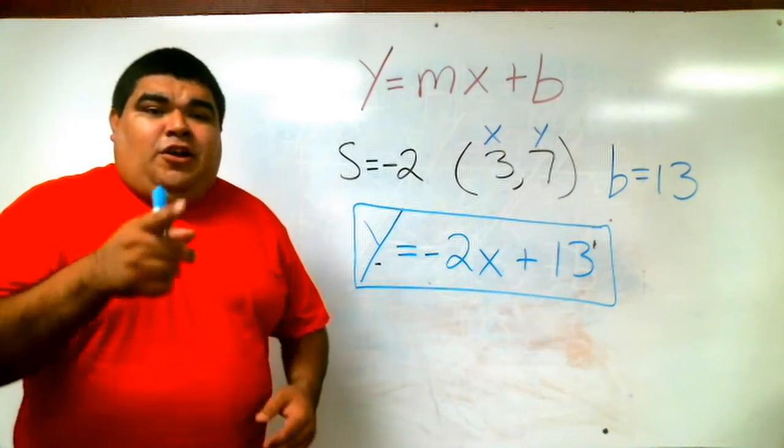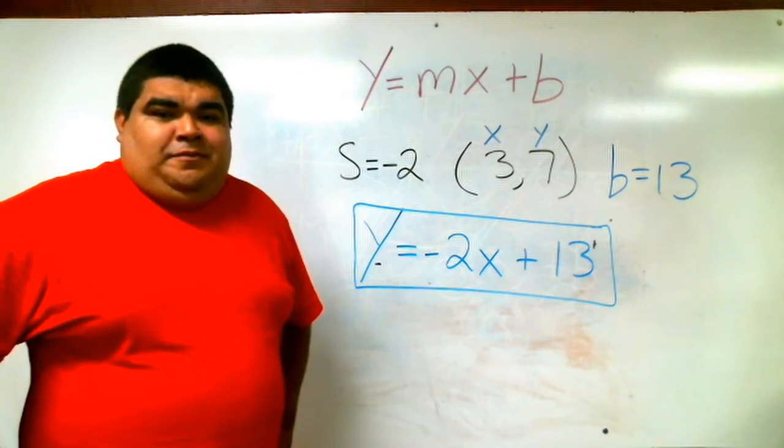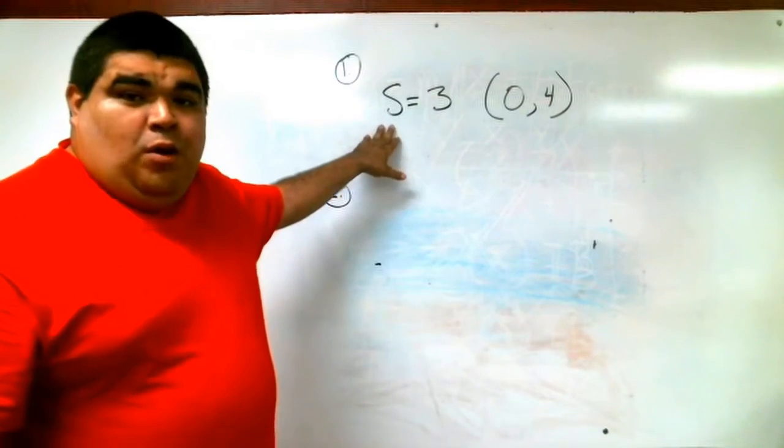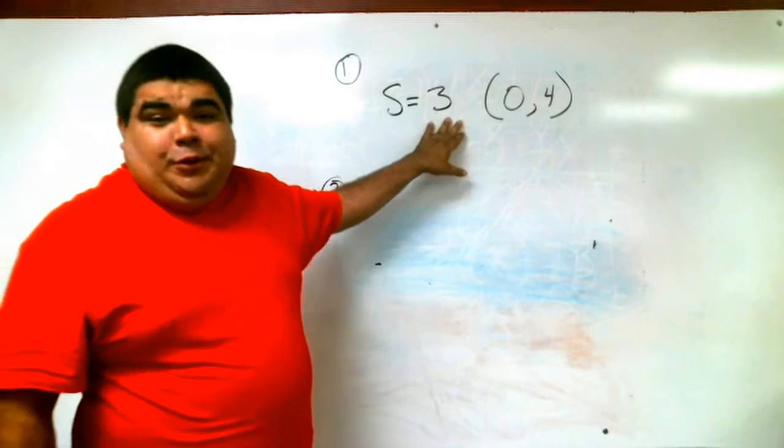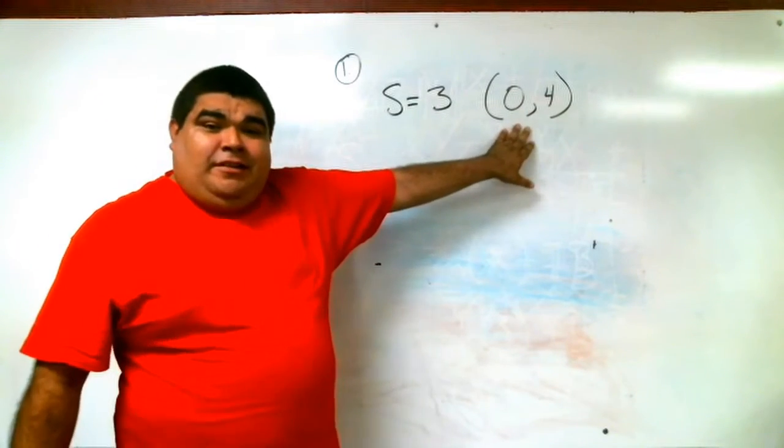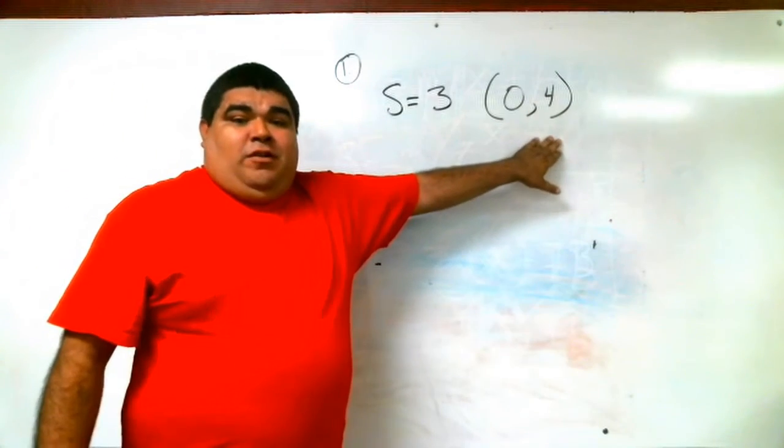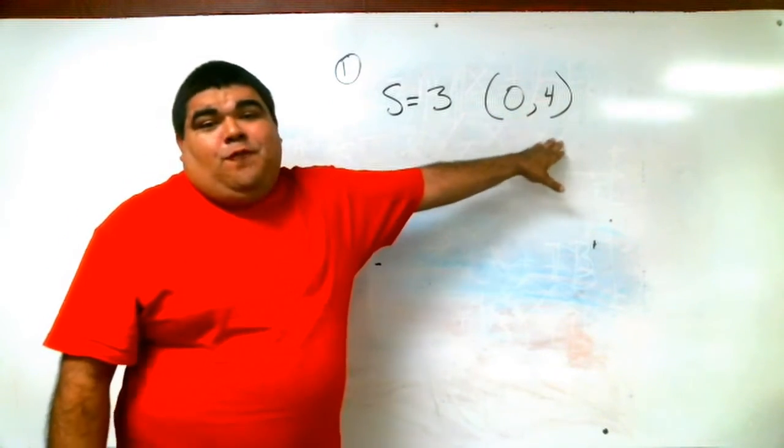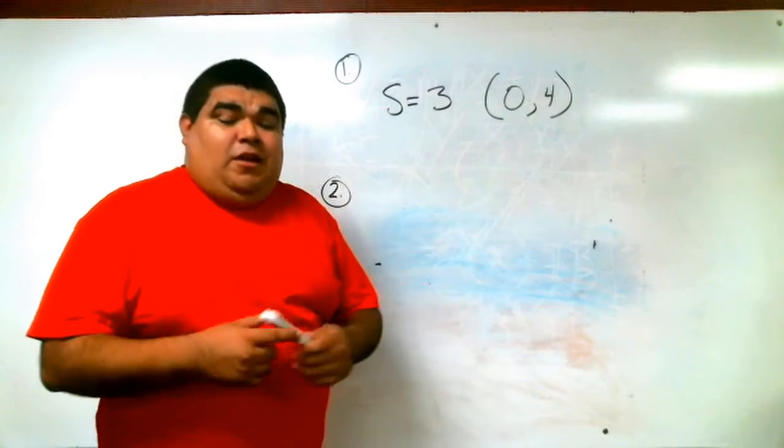All right. So here's your assignment. Here's the assignment for today. Number 1: the slope is 3, and you have a coordinate at 0, 4. So slope of 3, and then your coordinate is 0, 4.